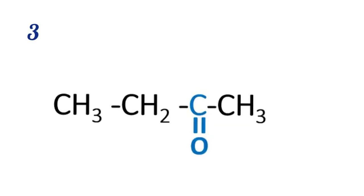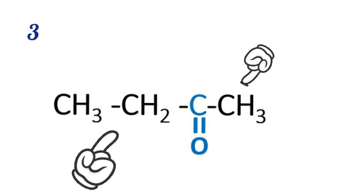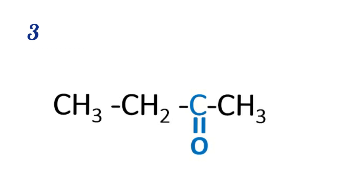How about this one? It's a ketone due to the presence of a carbonyl group — that is, a carbon double-bonded to oxygen — with two carbon groups attached to the carbon atom. So pause this video and tell me the IUPAC name of this compound. Yes, you were right — it's butanone.